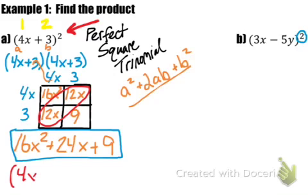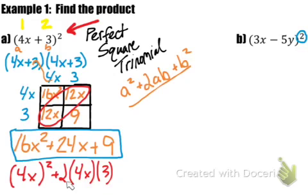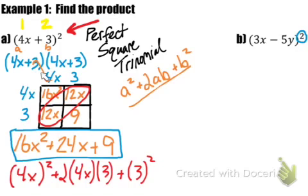We had our a term, 4x, and our b term, 3. Taking the form a squared plus 2ab plus b squared: 4x squared is 16x squared — that works out. Then 2 times our a term (4x) times our b term (3): 2 times 4 is 8, times 3 is 24, so 24x — that checks out. And finally, b squared is 3 squared, which is 9. So if you see a binomial being squared, it will automatically multiply out into this perfect square trinomial.